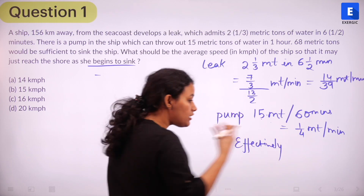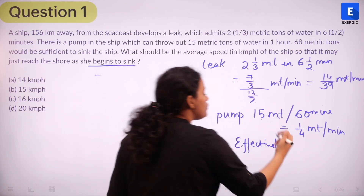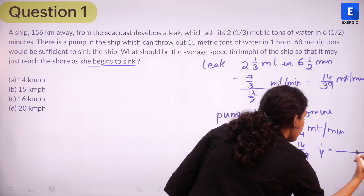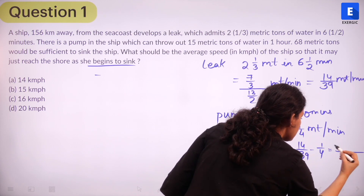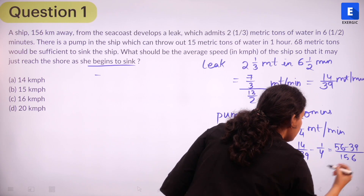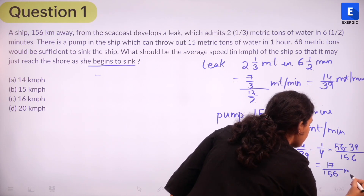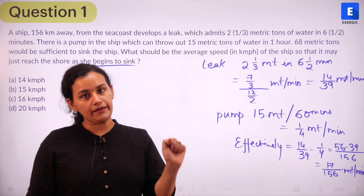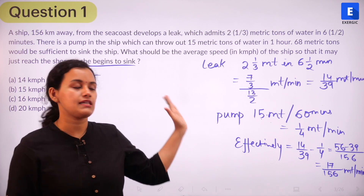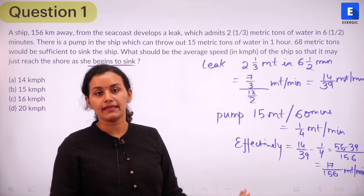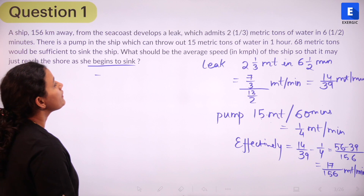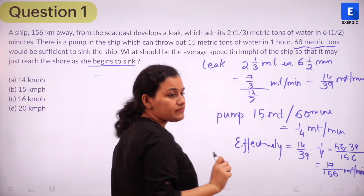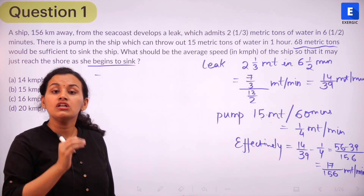The effective rate of water entering the ship per minute is the leak rate minus the pump rate: 14/39 minus 1/4. Simplifying, this gives 56/156 minus 39/156, which equals 17/156 metric tons per minute. So combining the action of the leak and the pump, 17/156 metric tons of water is effectively entering the ship every minute.